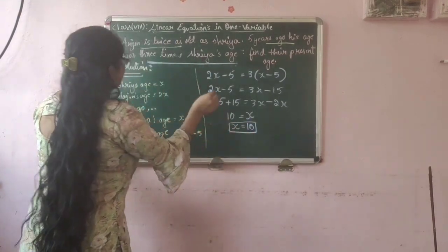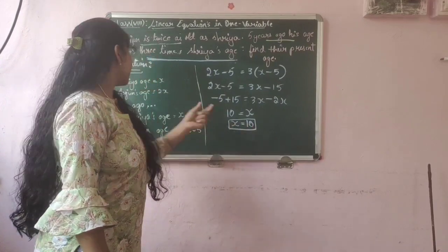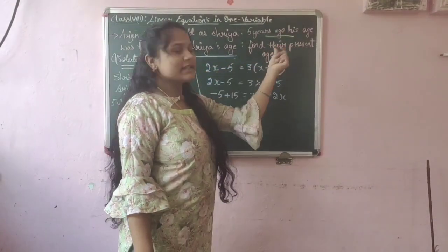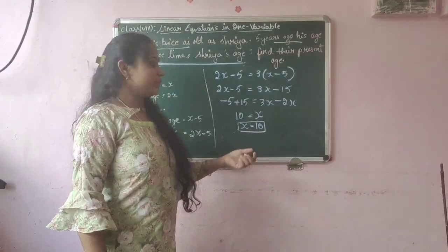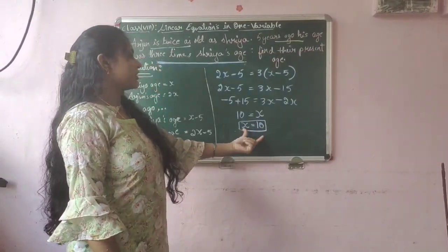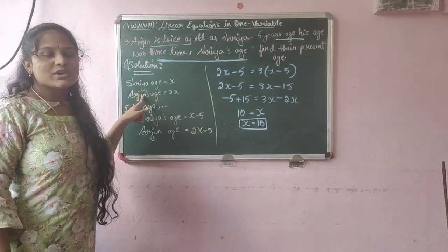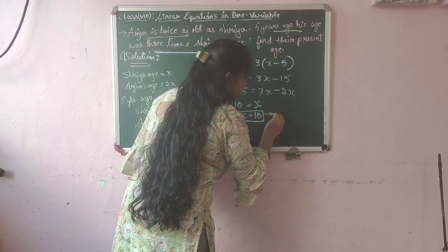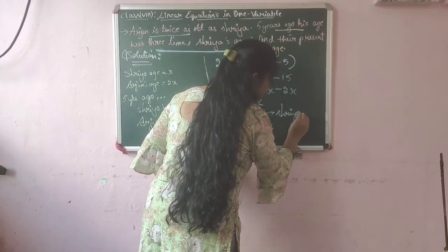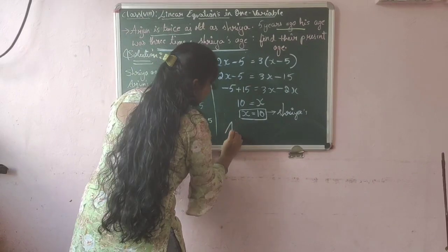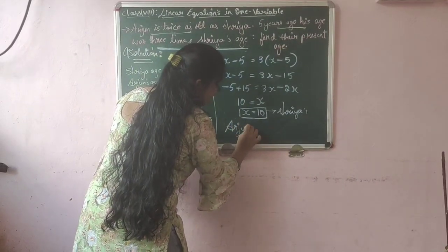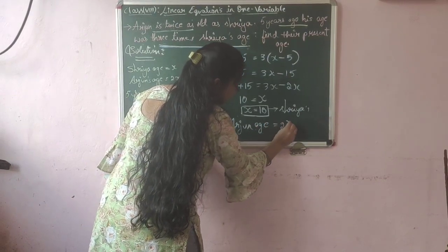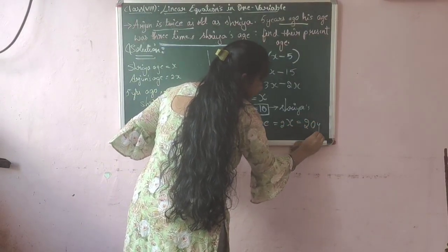So x is equal to 10. Since we took Shriya's age as x, the present age of Shriya is 10 years. Arjun's age is twice Shriya's age, that is 2x, so Arjun's present age is 20 years.